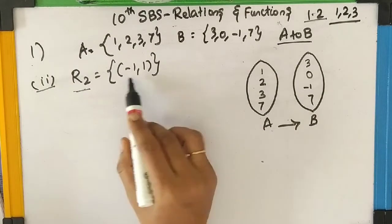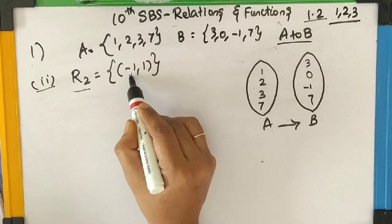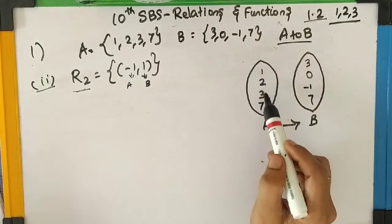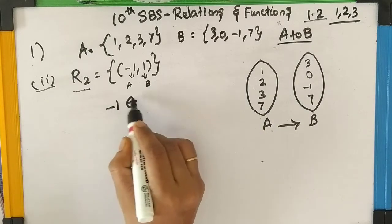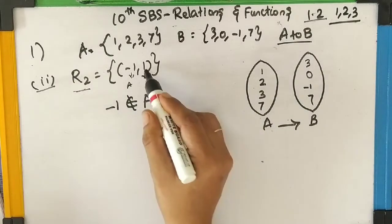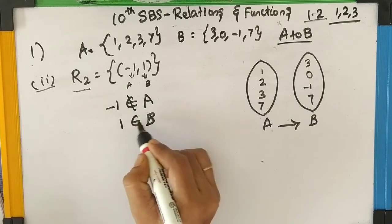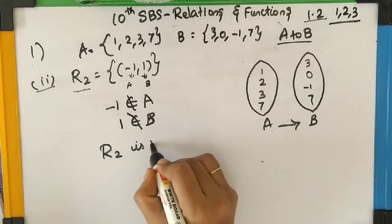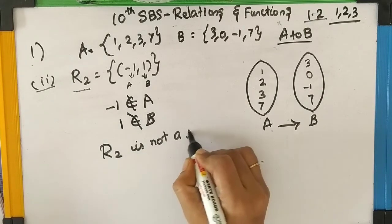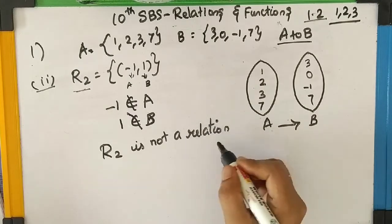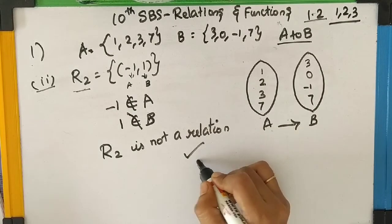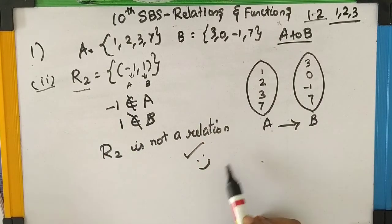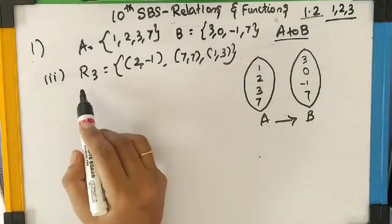R2 = {(-1, 1)}. Here, -1 does not belong to A and 1 does not belong to B. So, R2 is not considered — that is, R2 is not a relation. Because -1 doesn't belong to set A and 1 doesn't belong to set B.